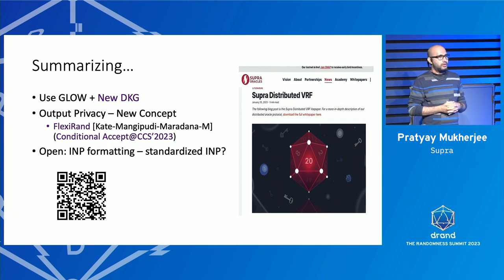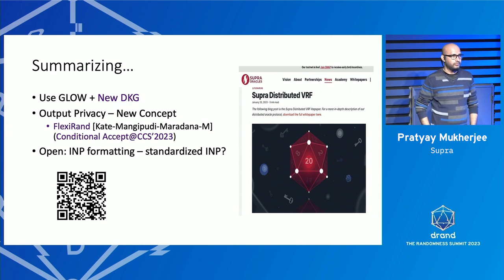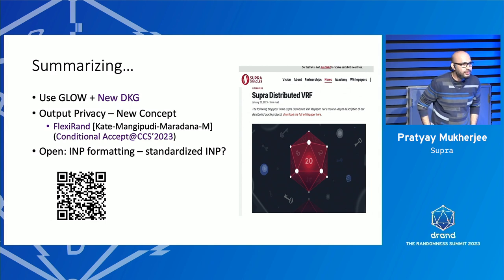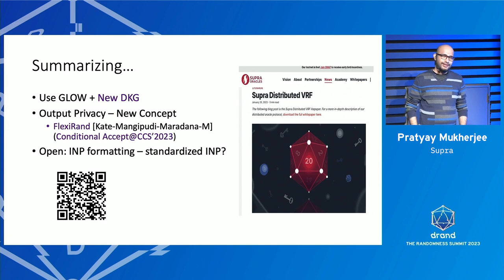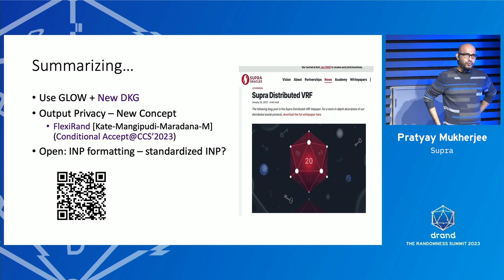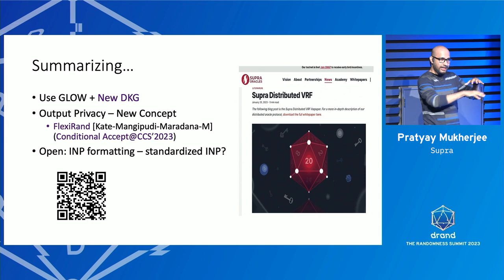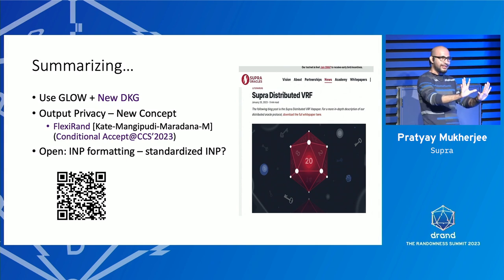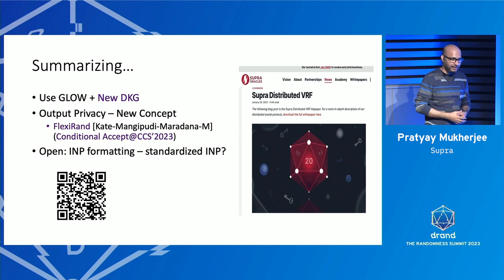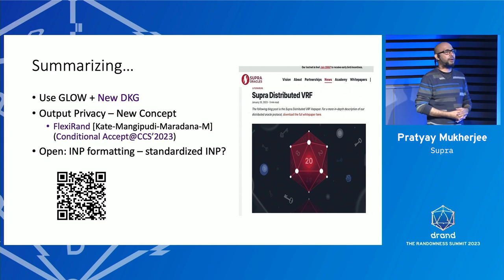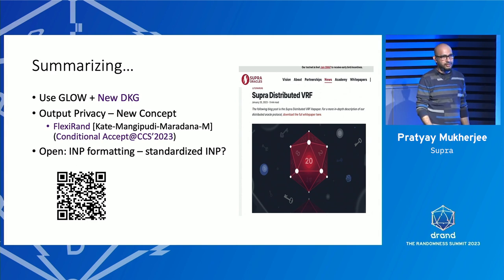Q: What is the governance of the nodes running this VRF? A: Right now, for the mainnet alpha launch, all nodes are internal and geo-distributed across three continents — nine nodes currently. The plan is to eventually scale to around 100 nodes. Governance is still being figured out; it's currently somewhat manual. We are curious how other services like DRAND handle this.